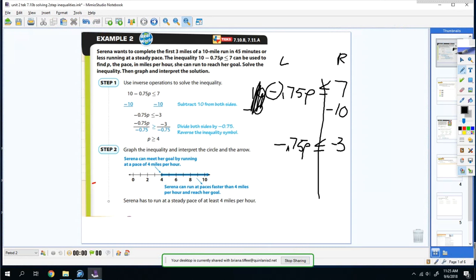So it's negative 0.75p is less than or equal to 7 minus 10 is negative 3. So now, you're going to divide negative 0.75 to both sides. So p comes down. Negative 0.75 divided into negative 3 is a positive 4.